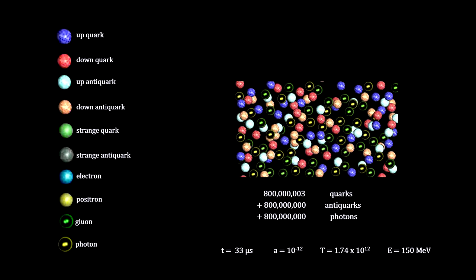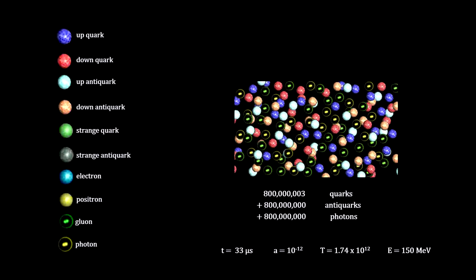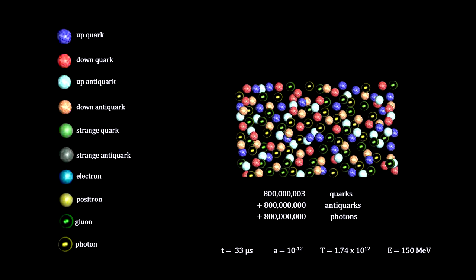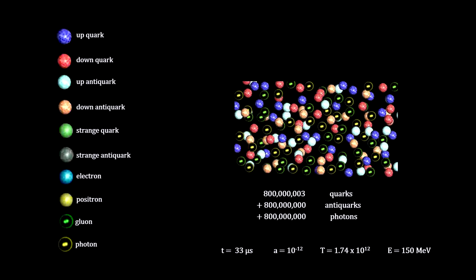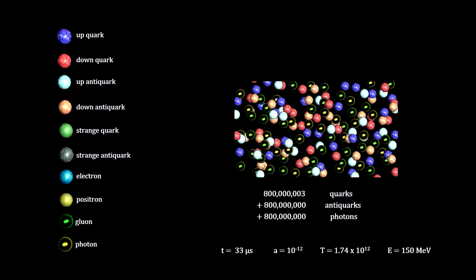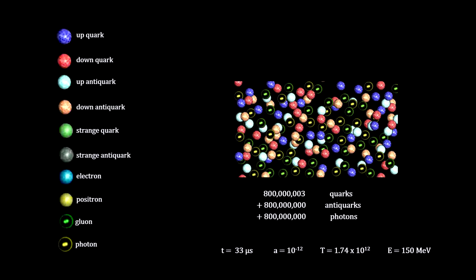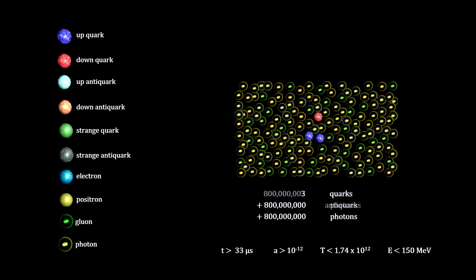Now, suppose nature had a very tiny tilt in favor of quarks over antiquarks. For example, let's say that for every 800 million and 3 quarks, there were only 800 million antiquarks. Then, when the universe cooled to the point that quark-antiquark pairs were no longer being produced, all the existing quarks and antiquarks would annihilate each other.